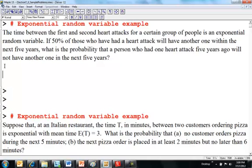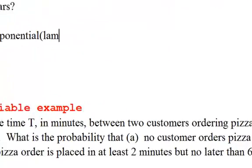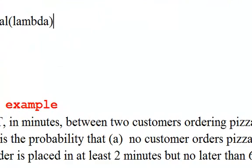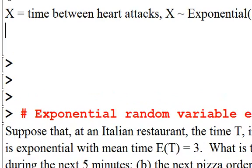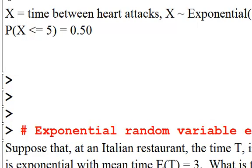The time between the first and second heart attacks for a certain group of people is exponential. So, x, I'll let x equal time between heart attacks, and x is exponential. And we don't know what the parameter is, so we'll just put lambda in here. 50% of those who have had a heart attack will have another one in the next five years. So, probability x is less than or equal to five years is equal to 50%. What's the probability that a person who had one heart attack five years ago will not have another one in the next five years? So, no matter what time we start at, when you look at an exponential, it's as if you're starting brand new.